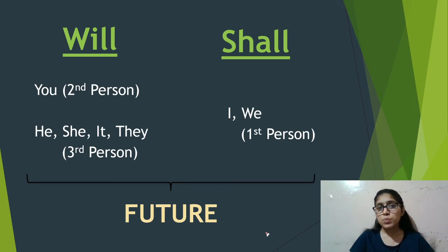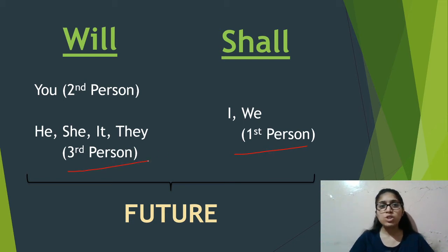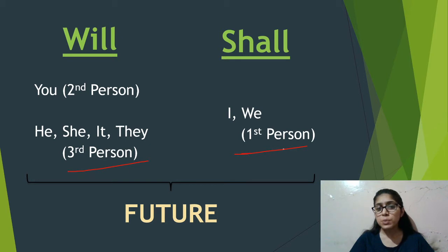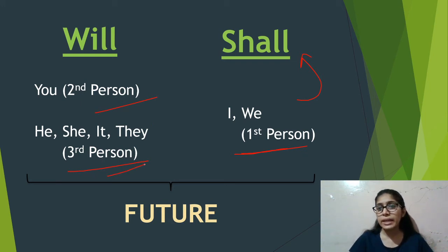You have learned something from childhood: I and we use shall, and others use will — whether it is you, he, she, it, or they. When we learn grammar in childhood, we learn this: I and we use shall, and second and third person — like you, he, she, it, they — we use will.